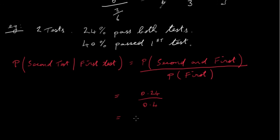When you work that out — 0.24 divided by 0.4 — you get 0.6, which is 60%. So the probability of passing the second test, given that you've already passed the first test, is 60%. Thank you.